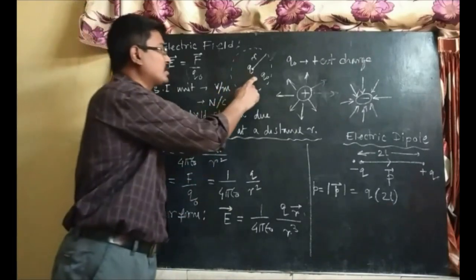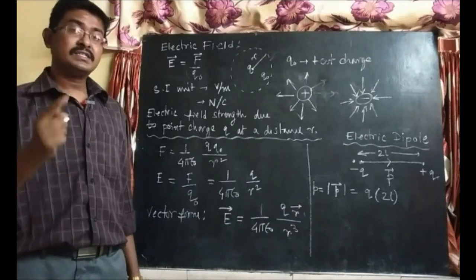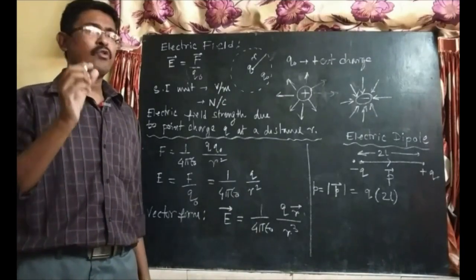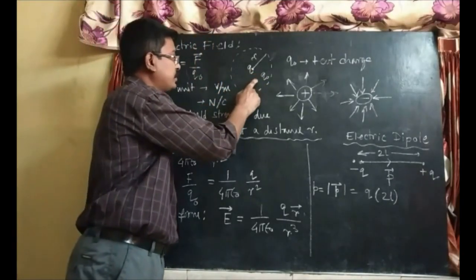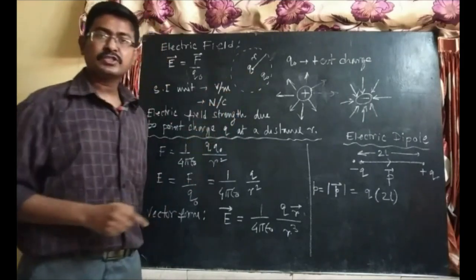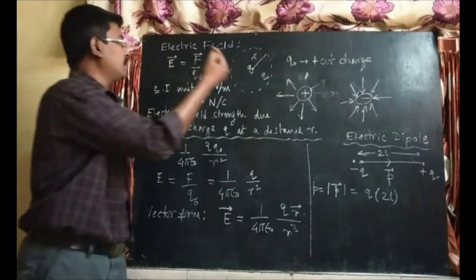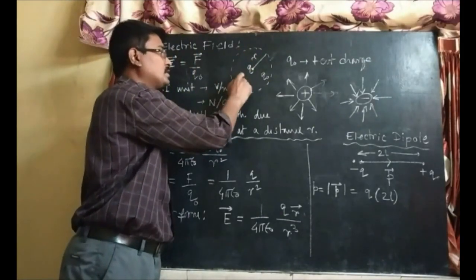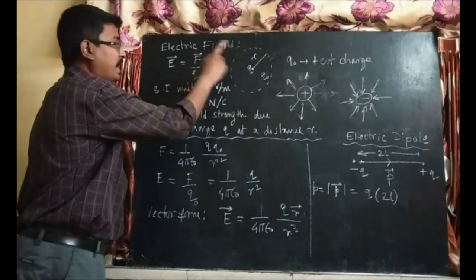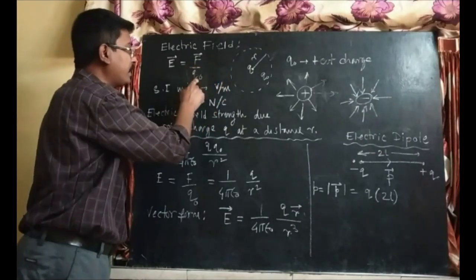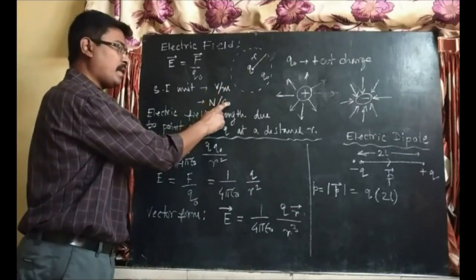Now suppose a test charge Q0 is placed here. A test charge is an infinitesimal positive charge. If we bring this charge near Q, there will be repulsion between the two charges, which tells us a field is created by the positive charge Q. Electric field strength is given by that force divided by the test charge. The SI unit is volt per meter or newton per coulomb.